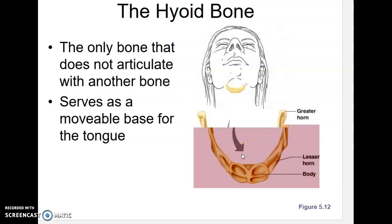That's kind of a morbid thing to say, but it is true. The hyoid is this kind of U-shaped or C-shaped bone that is in your upper neck.